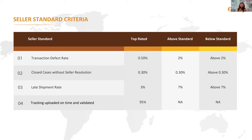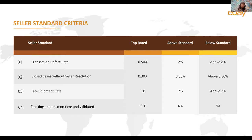Improving beyond the above standard criteria takes you to the next level: top-rated seller. This means your transaction defect rate needs to be 0.50% or below, cases closed without seller resolution maintained at 0.30%, and your late shipment rate at 3% or less. When evaluated, if all three parameters are met, there are chances you might become a top-rated seller. You also need to ensure the fourth criteria — tracking uploaded on time and validated — is at 95% or more.